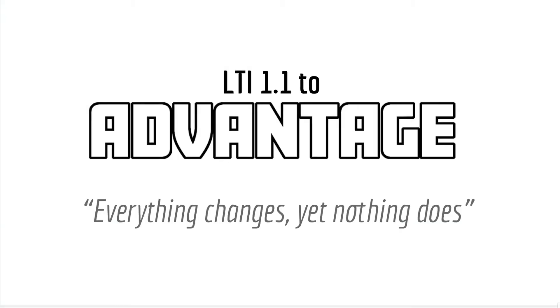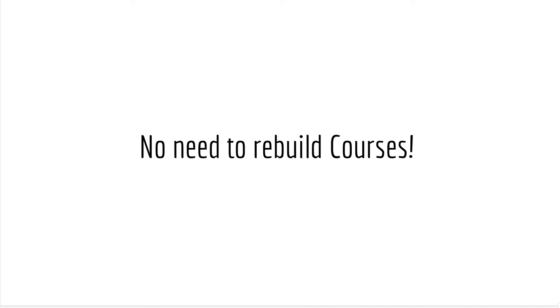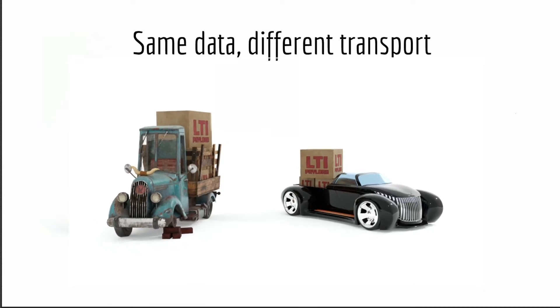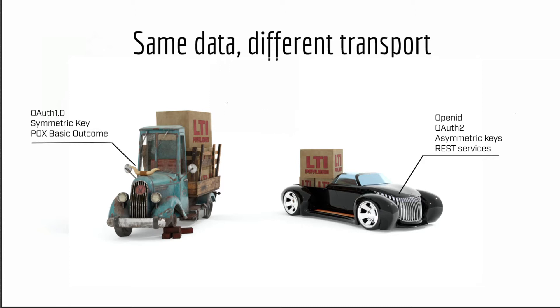LTI Advantage was built to allow migration from LTI 1.1 to Advantage. Everything is changing on the wire, but the data is still there, which means you can keep your courses — the links, gradebook setup, and everything you've set up. When you move your tool from 1.1 to 1.3, you should be able to keep all of that. The question is: how do I find my data in an LTI Advantage payload compared to an LTI 1.1 payload? That's what we'll look at in the next few slides.